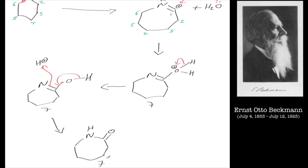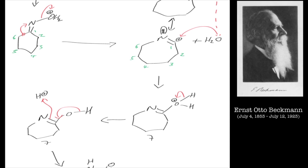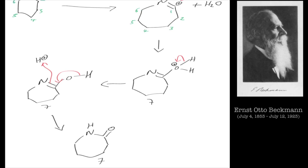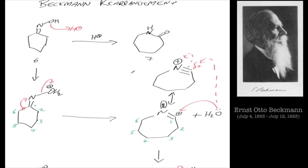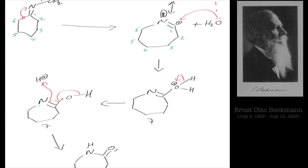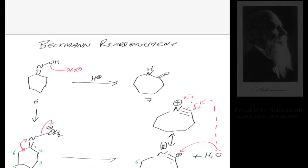We've still got a seven-membered ring, so we've got our product, and that is the Beckman rearrangement. Quite straightforward - basically water leaves and water comes back, you get some tautomerism, and that will give you your final product there. So key things to remember are: protonate your oxime, water leaves, water comes back, product tautomerizes to give the amide. And that is the Beckman rearrangement.